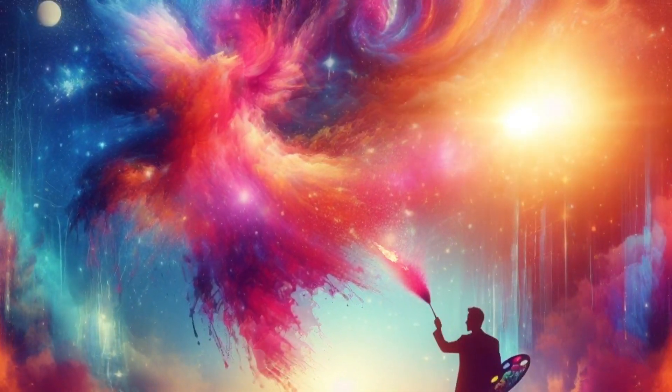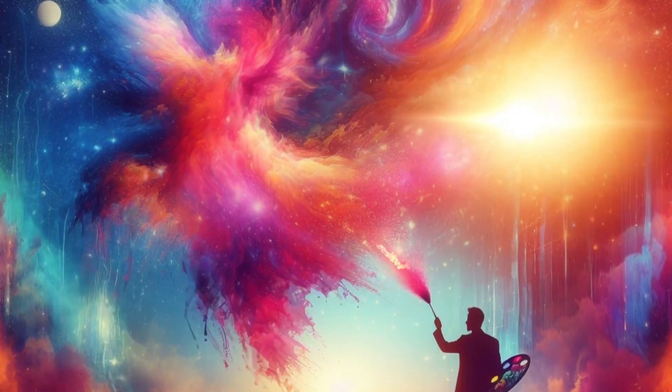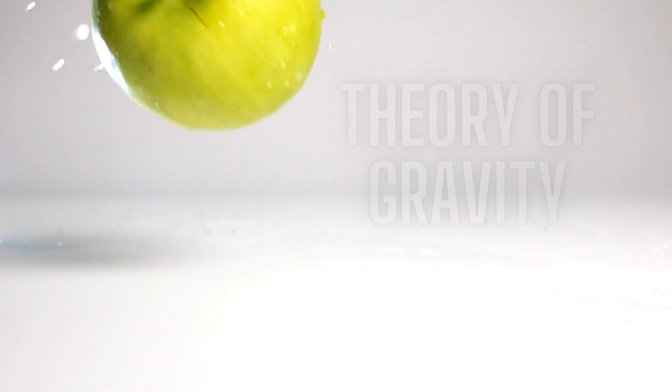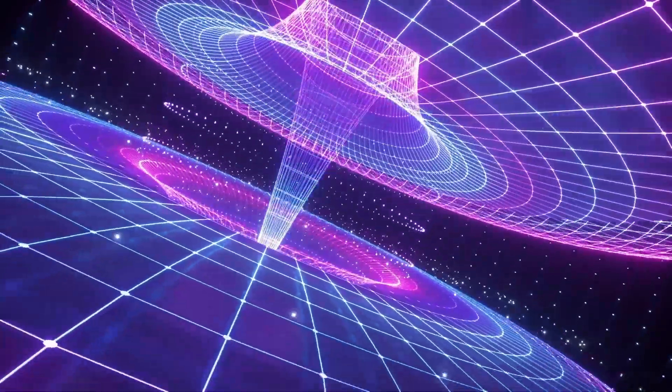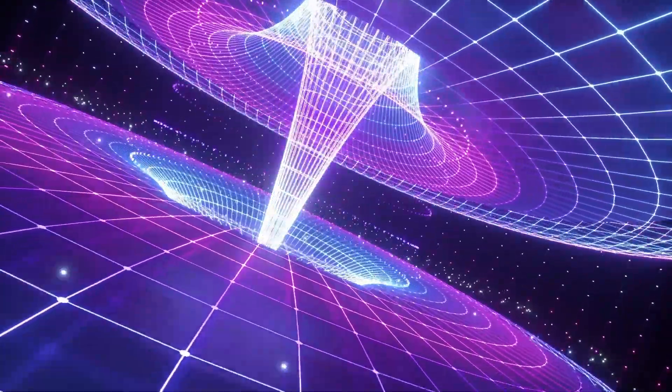But if we zoom out further, this gravitational attraction begins to act in reverse, causing galaxy clusters to accelerate away from each other rather than drawing each other in. So what's going on here? In Newton's theory of gravity, all objects with mass exert a gravitational pull, and in general relativity, all objects with mass curve the space-time around them.